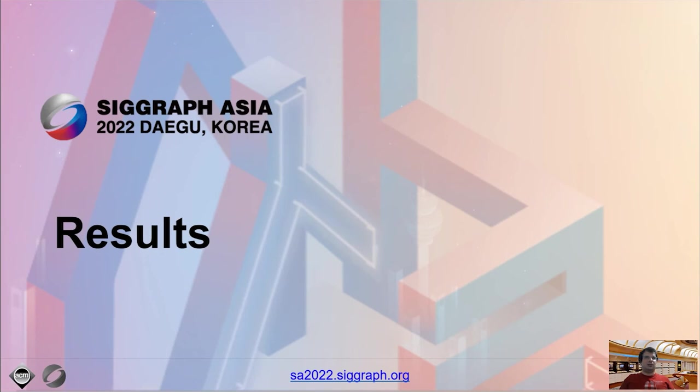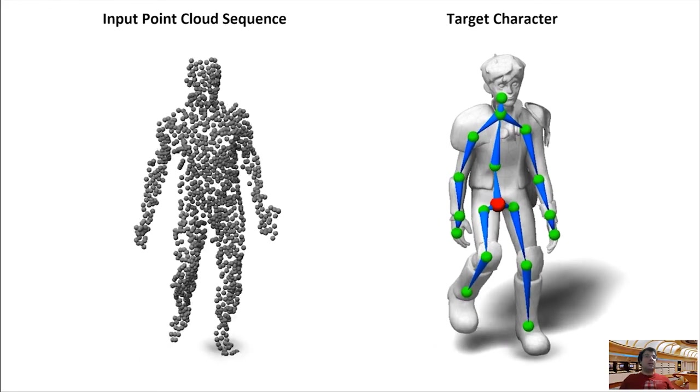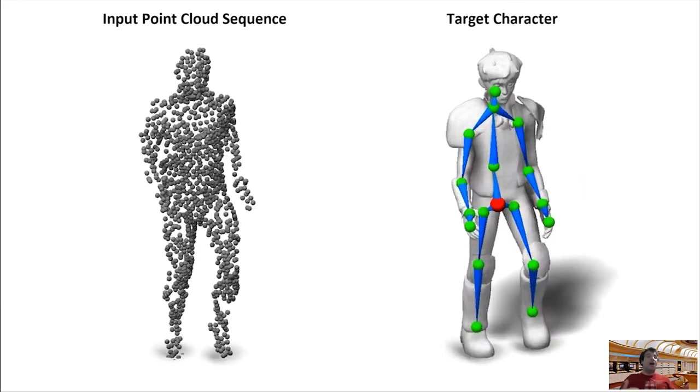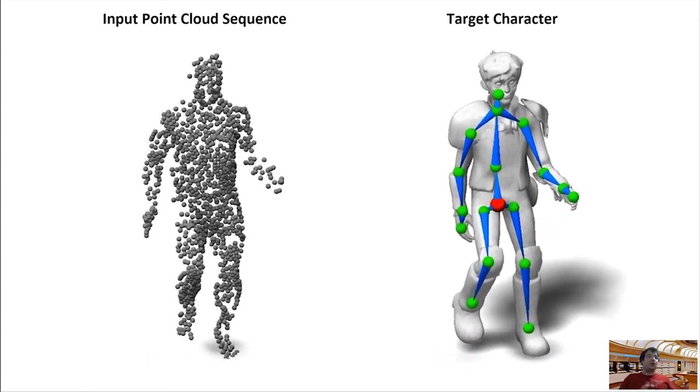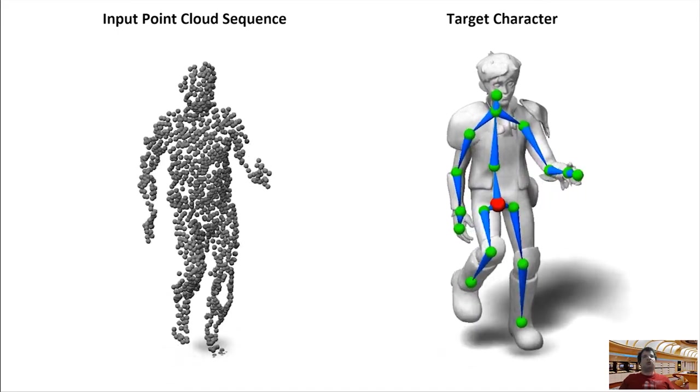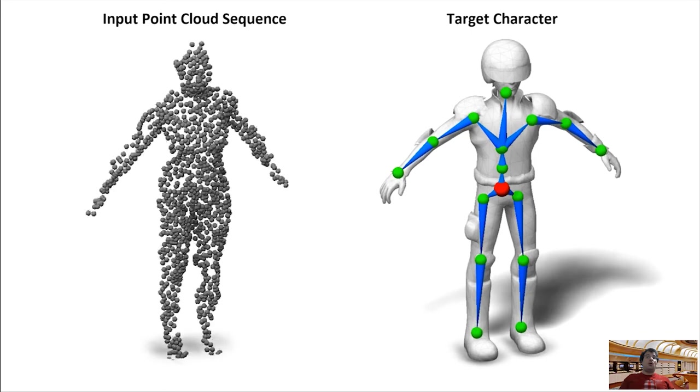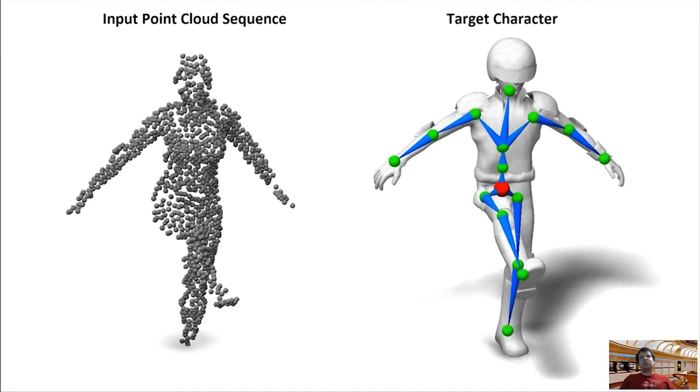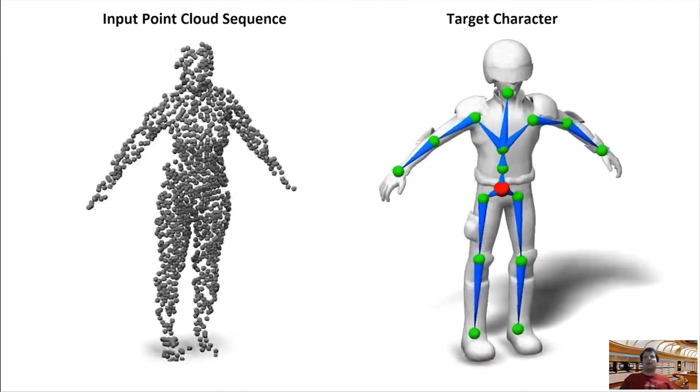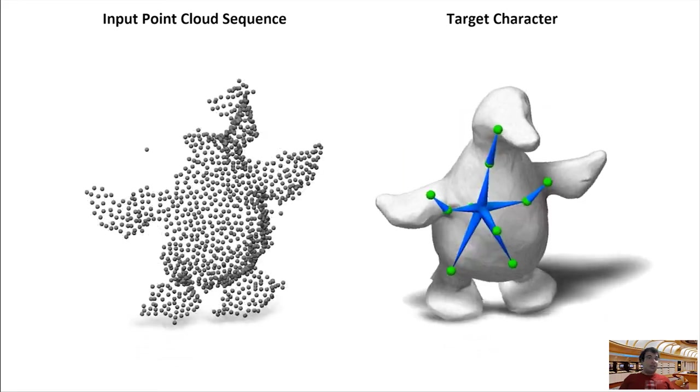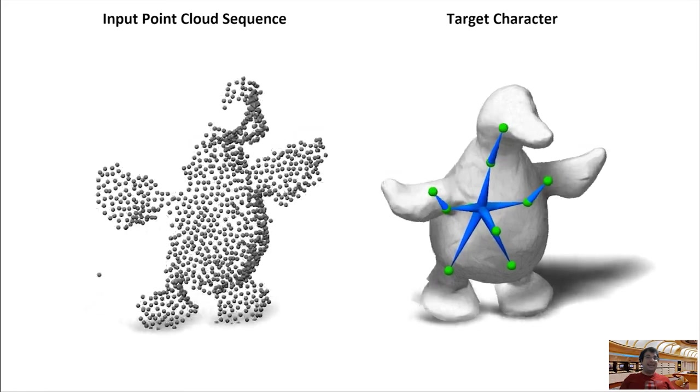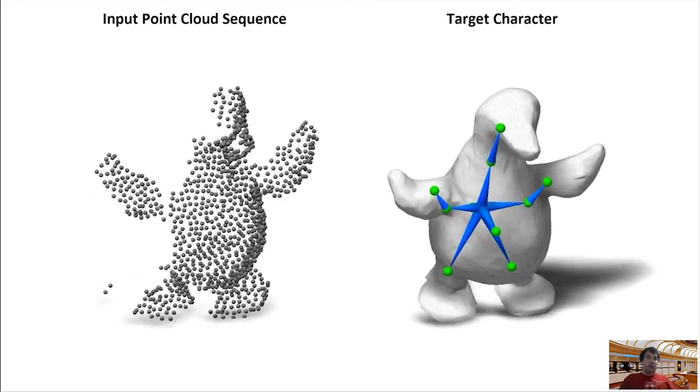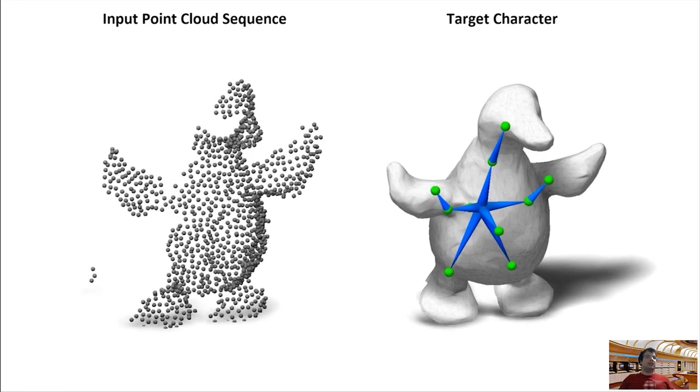Let's move on to show some results of our method. This is the resulting rigging and animation for a character driven by the motion of a real-world performing human from the so-called FAUST dataset. Note the different part proportions between the source and target character. Our method still discovers plausible bones. Here's another example. Our method transfers the motion from this real-world point cloud from the FAUST dataset despite structural differences of the target character, such as its clothes, accessories, or helmet. This is an example of a captured toy duck from the KillingFusion dataset. We transfer the motion to a similar 3D puppet. The predicted skeleton is more coarse here since the whole arms and legs of the puppet move rigidly.